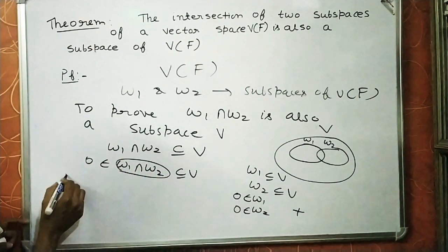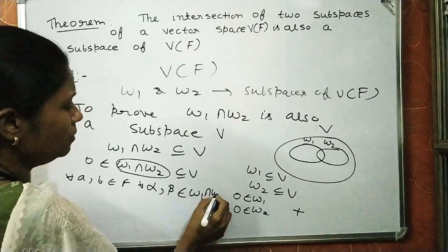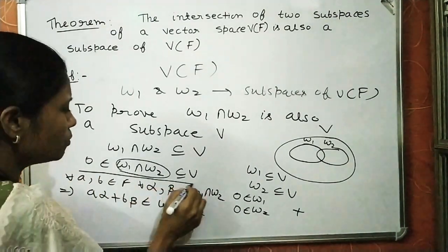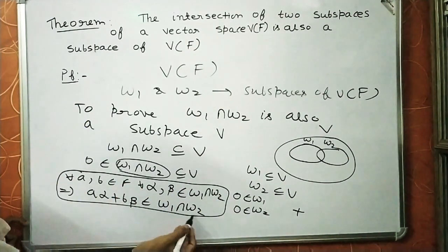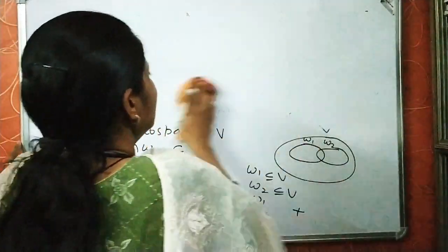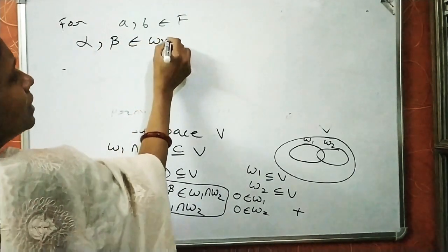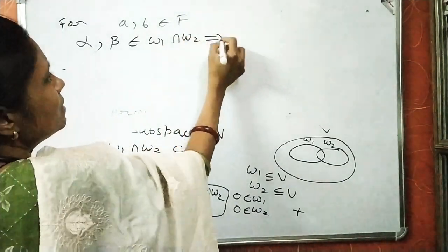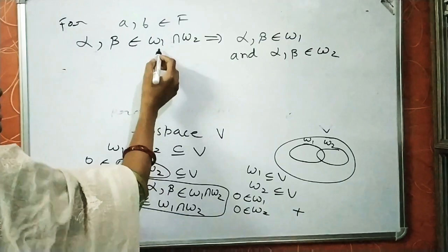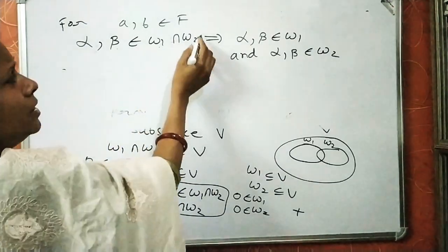To prove that W1 intersection W2 is a subspace of V, we have to show that for any A, B in the field F and any vectors alpha, beta in W1 intersection W2, we have A·alpha + B·beta also belonging to W1 intersection W2. If we can prove this, it will imply that W1 intersection W2 is also a subspace of V. Now, since alpha and beta are in the intersection of both sets, alpha and beta belong to W1 and also to W2.